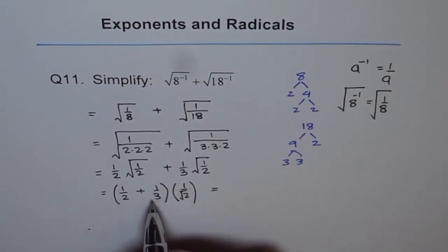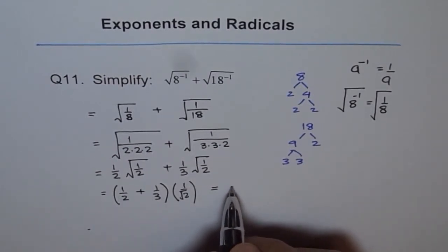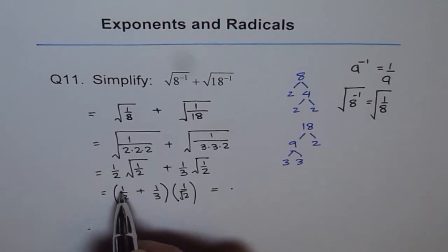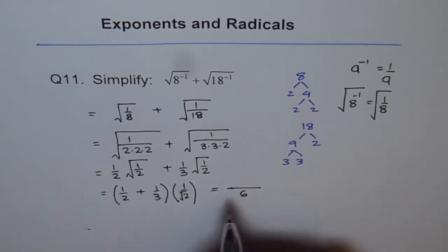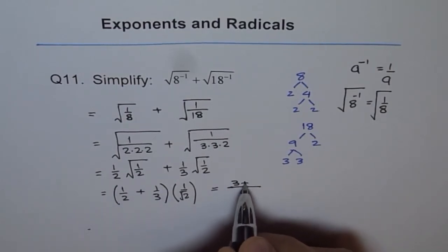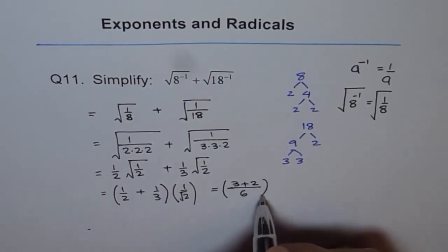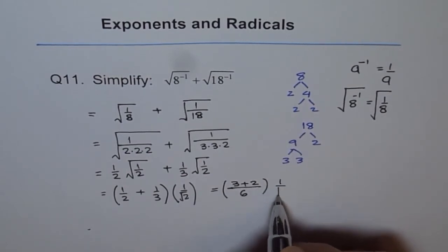So we can add by taking common factor. Common lowest common denominator is 6. So to make it 6, I will have to multiply this by 3 and this by 2. So I get 6 here. And this is 3 plus 2.